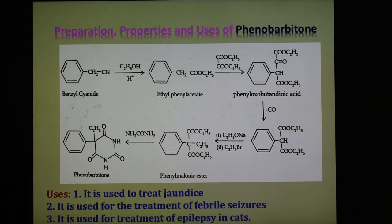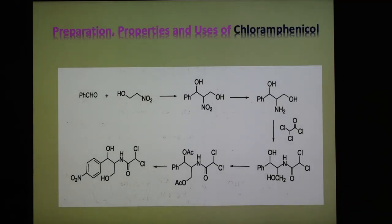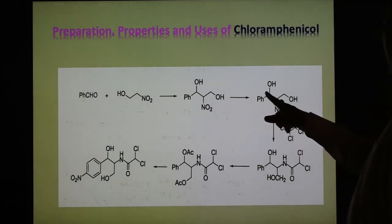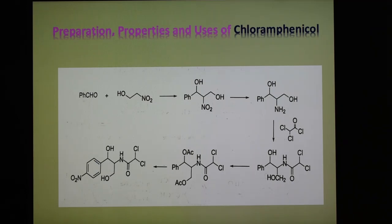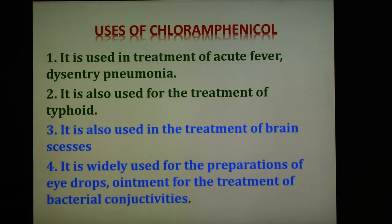The next drug is chloramphenicol. The synthesis of this important drug is shown step by step in the slide. This drug is important for the treatment of acute fever, dysentery and pneumonia. It is also used in drug ointments and for the treatment of bacterial conjunctivitis. A serious side effect of chloramphenicol treatment is aplastic anaemia.